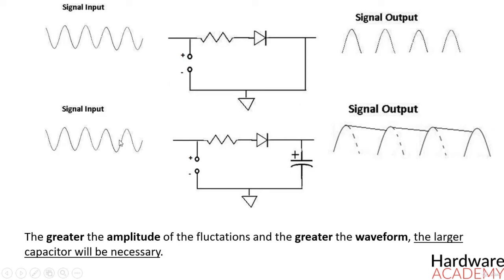If you are smoothing a 30 mV waveform, a 10 µF capacitor may suffice to smooth out the signal.